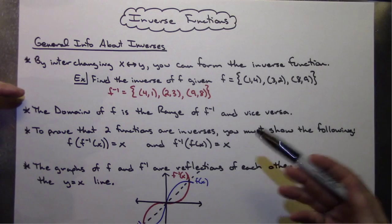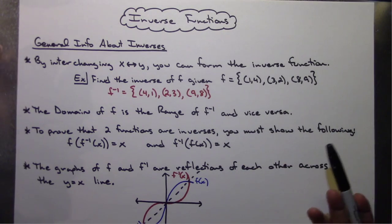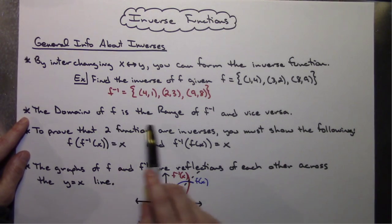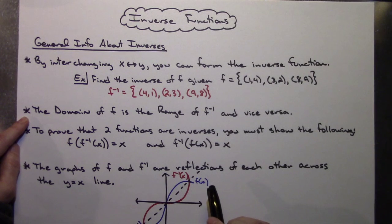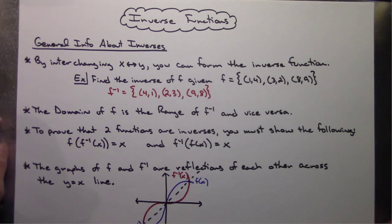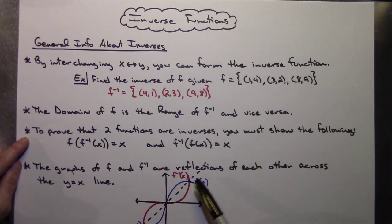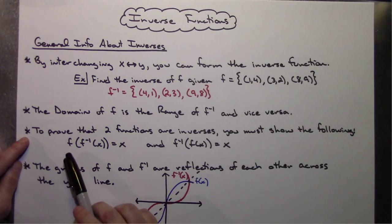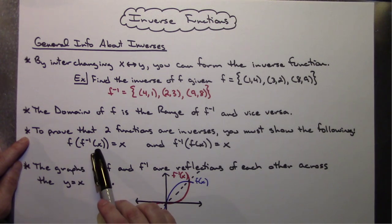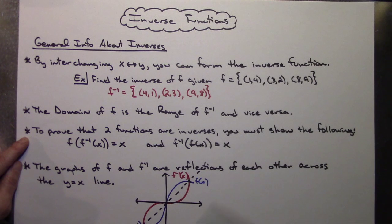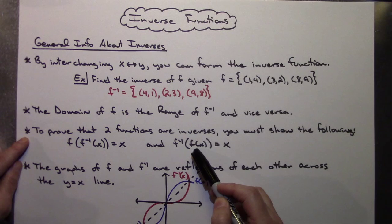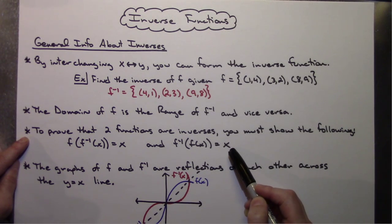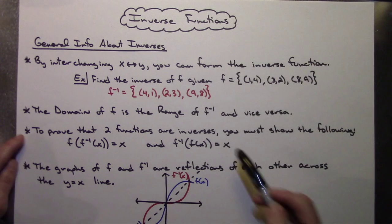Understanding that, you should also realize that the domain of F is the range of the inverse function and vice versa — an important fact when working with inverse functions in calculus. You should also remember that to prove two functions are inverses, you must show that F of G of X simplifies down to X, and likewise G of F of X also simplifies down to X. This is generally shown algebraically in a two-column process.